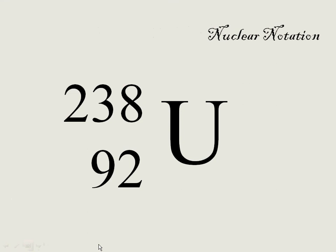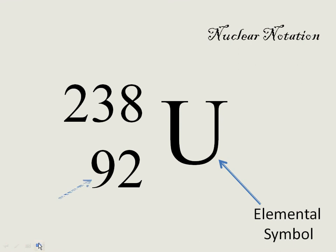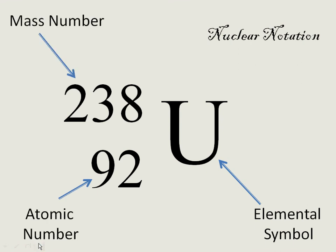Just a reminder about your nuclear symbol. You write your chemical symbol with your atomic number — 92 for uranium — in the lower left, and its mass number, which is protons plus neutrons, goes in the upper left-hand corner. That's our nuclear notation, so you need to be very comfortable with that. We are talking about particular nuclides, and this number is not coming from the periodic table.